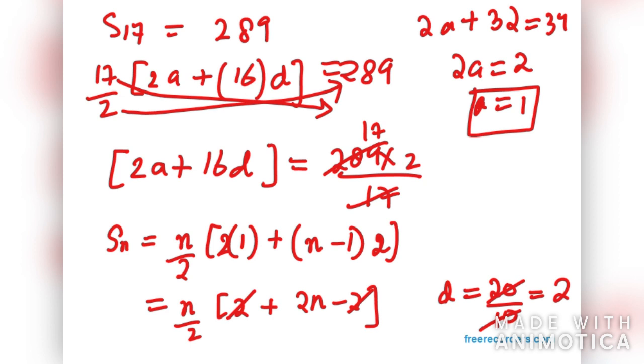So we are left with N over 2 times 2N. 2 and 2 will get cancelled out. So the final answer is N squared. That means sum of N terms of this AP is equal to N squared. That's all.